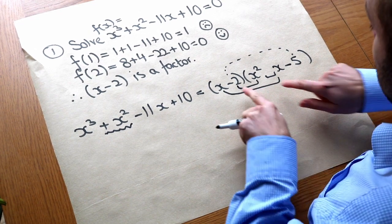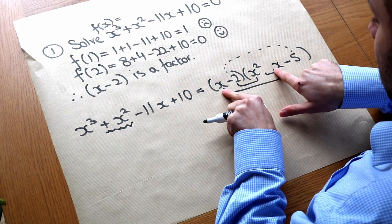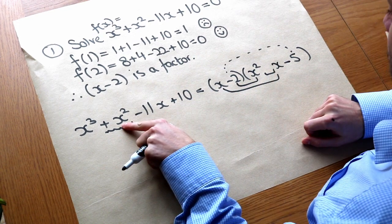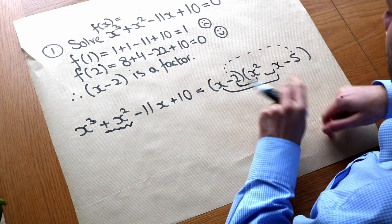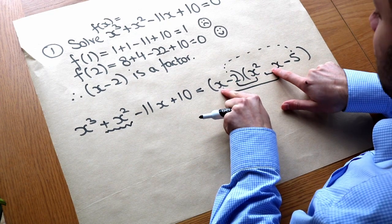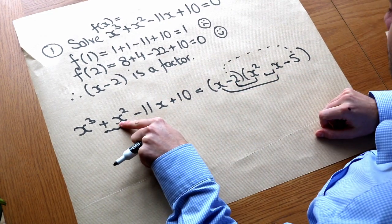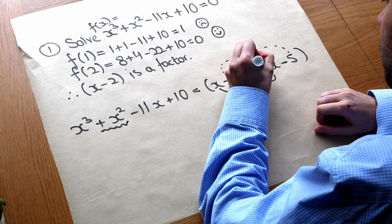So if we combine those together we've got minus two x squared plus something x squared is one x squared. Well minus two plus three is one. So minus two x squared plus three x squared would give you the one x squared. So that must be plus three.